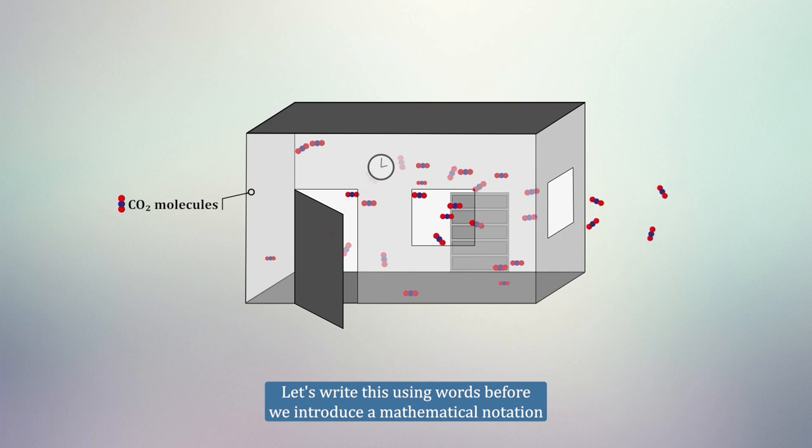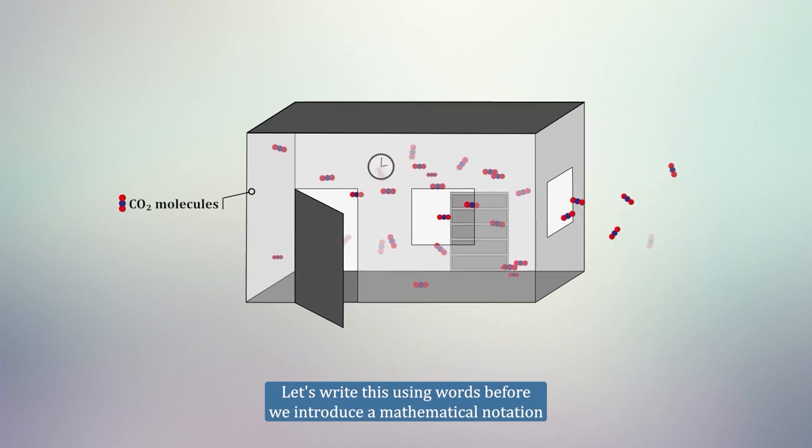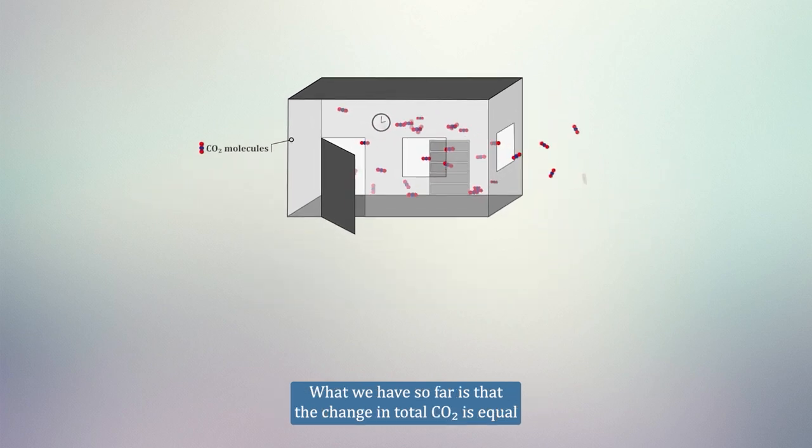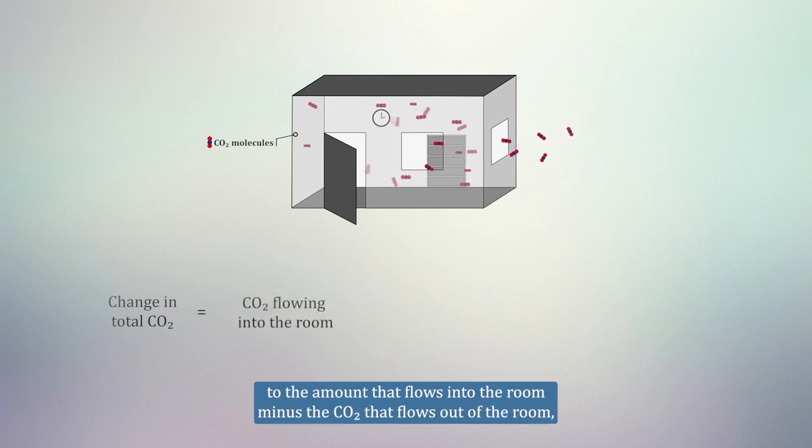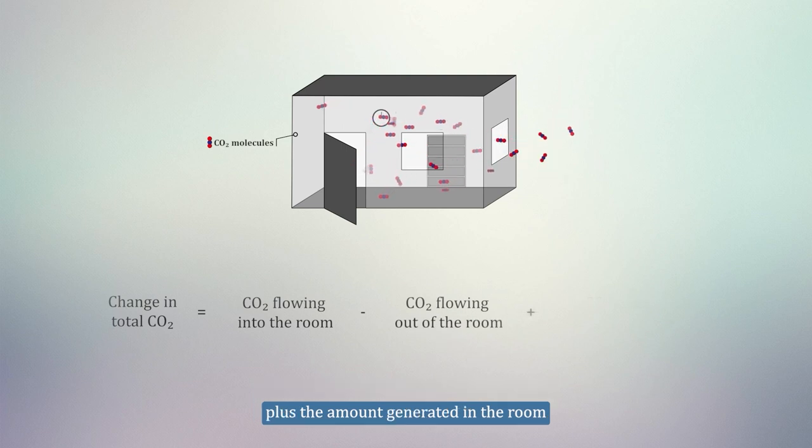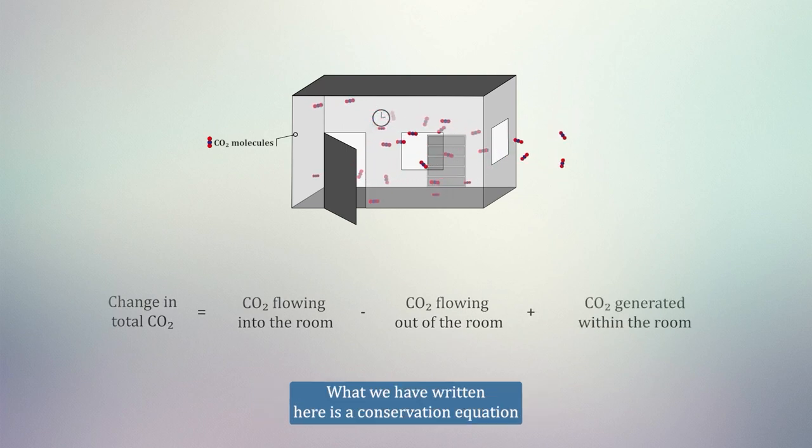Let's write this using words before we introduce some mathematical notation. What we have so far is that the change in total CO2 is equal to the amount that flows into the room, minus the CO2 that flows out of the room, plus the amount generated in the room. What we have written here is a conservation equation.